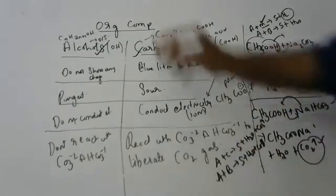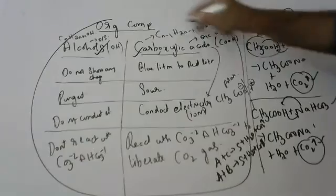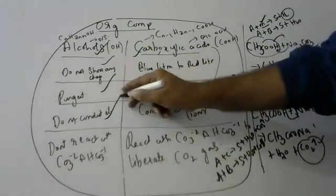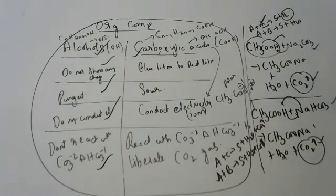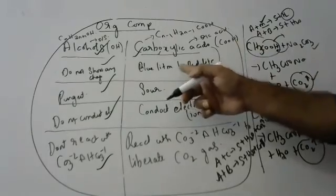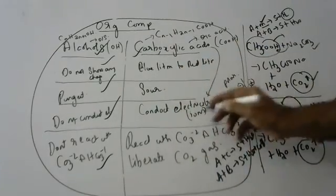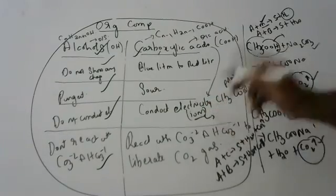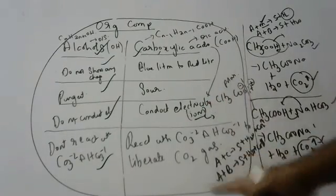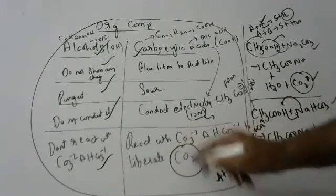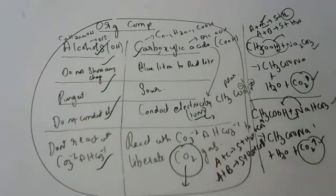These are the four important differences between alcohols and carboxylic acids. For alcohols: no effect on litmus, pungent smell, do not conduct electricity, do not react with carbonates. For carboxylic acids: they turn litmus red, they are sour, they conduct electricity because they have ions, and they react with carbonates and bicarbonates to liberate carbon dioxide. Carbon dioxide is tested using lime water, which turns milky.